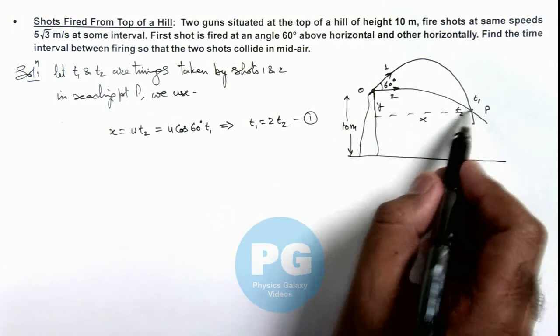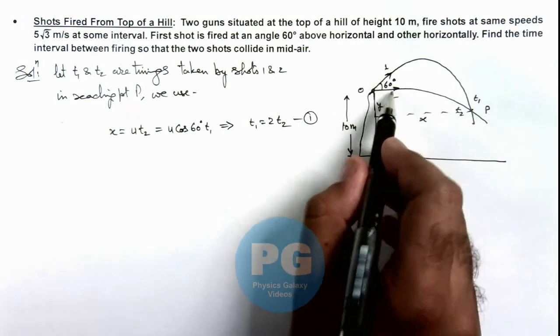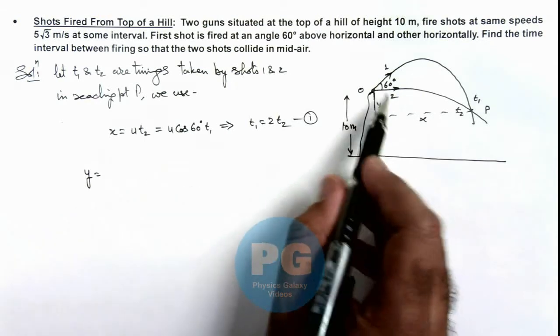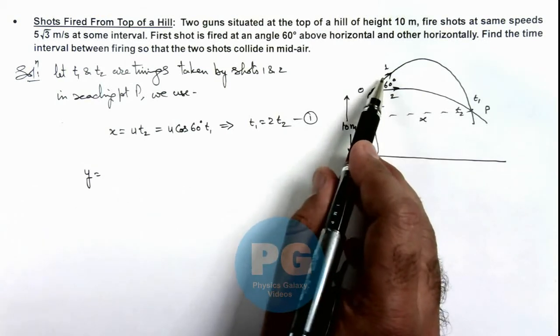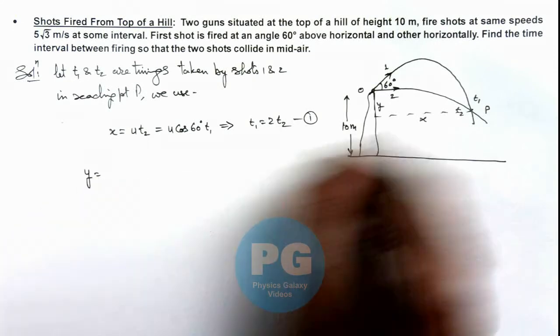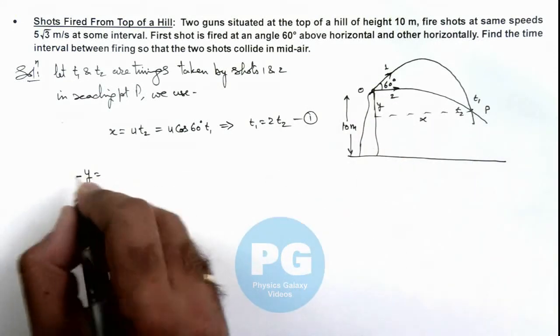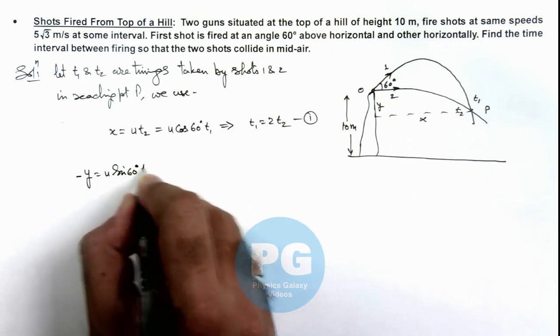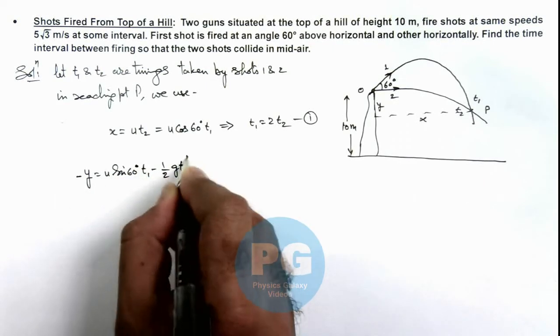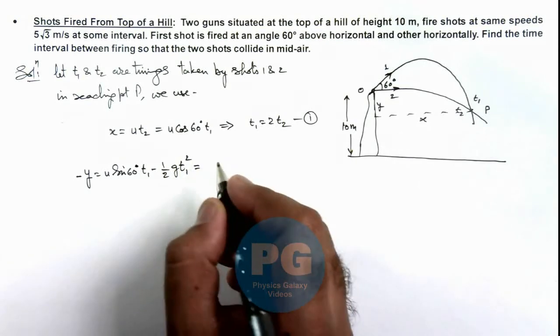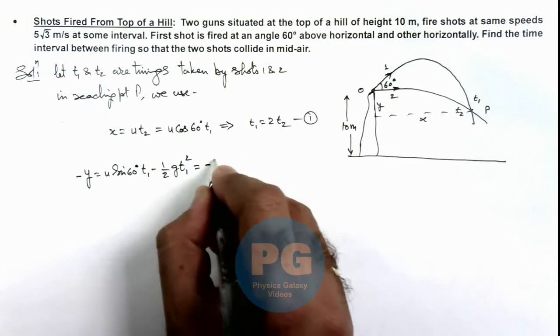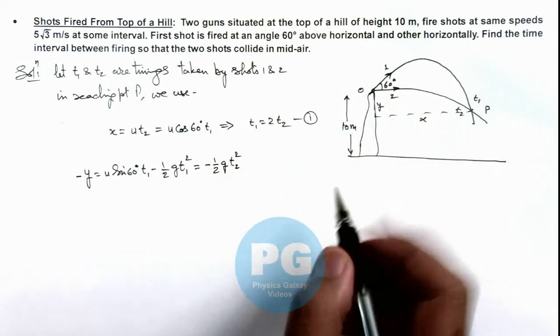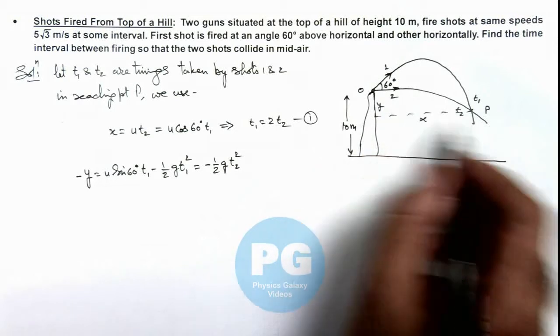And for the distance y travelled by 1 and 2 here we can write, y is equal to, for this shot 1 we can write it as, this is in negative side we can write minus y is equal to u sine 60 degree into t1 minus half g t1 square. The same can be written as minus half g t2 square because the second shot is not having any initial speed so it will fall in time t is half g t2 square.